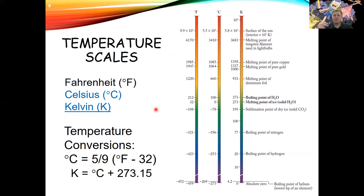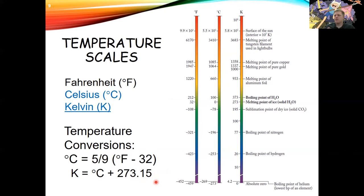You'll need to be able to convert between Fahrenheit, Celsius, and Kelvin. Going from Fahrenheit to Celsius: take degrees Fahrenheit minus 32 and multiply by 5/9 — that's an exact conversion. Once you're in Celsius, add 273.15 to get Kelvin. In this class you'll often hear us just add 273, since we don't always need that extra 0.15.